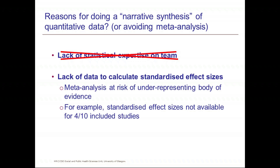Another reason might be that you don't have the data to calculate standardised effect sizes. In some topics, maybe some of the less clinical topics like public health, certainly in the past, it's been quite common for studies to be not that well reported. So they don't maybe present a measure of variance, and you can't always calculate or transform your data into standardised effect sizes. The risk is that you might not be able to include all your data into the meta-analysis, so you're at risk of under-representing the body of evidence.